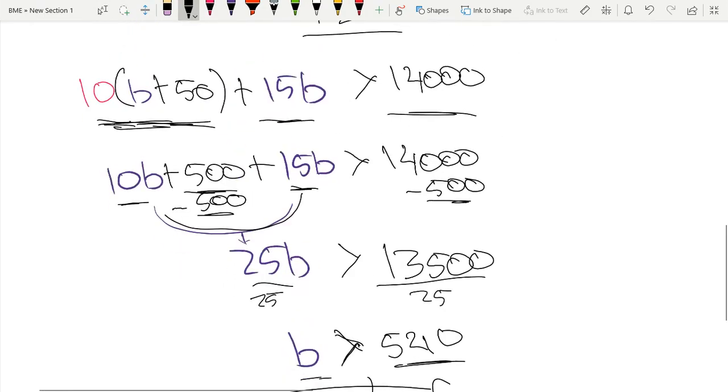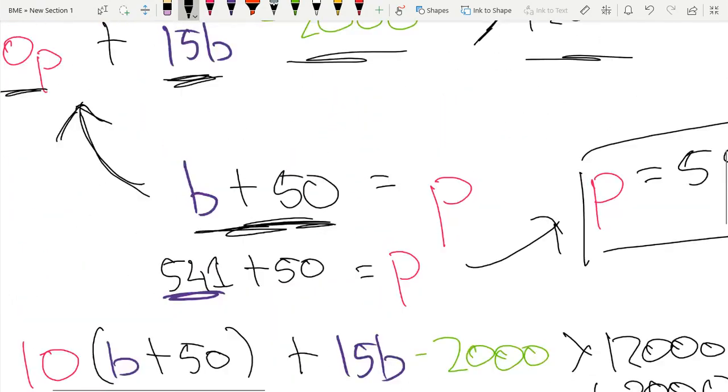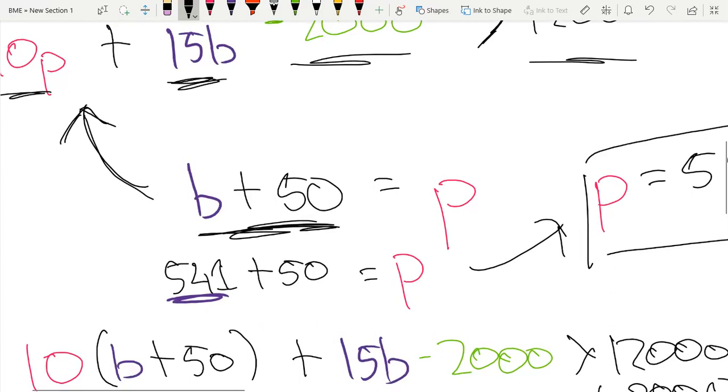So now if we're selling 541 burgers, we would just have to plug 541 into here. That's why you saw this equation a bit earlier.